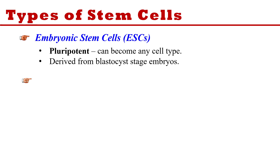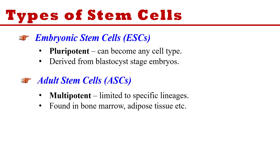The second type is adult stem cells. These are found in bone marrow, adipose tissue, etc. These are not pluripotent but are multipotent, meaning they can change into some specific cell lineages. For example, they can change into hematopoietic cells — blood cells — but they cannot change into any kind of cell.